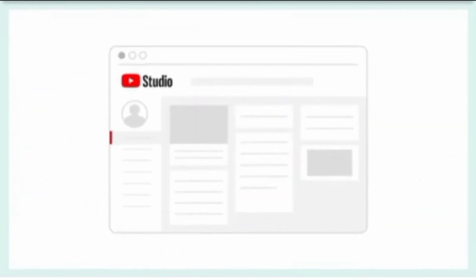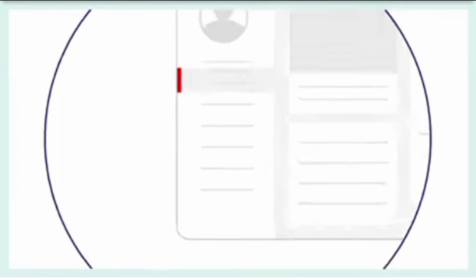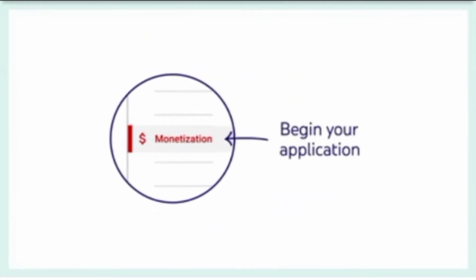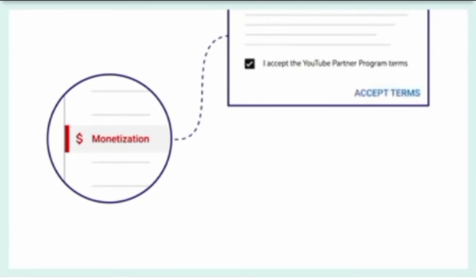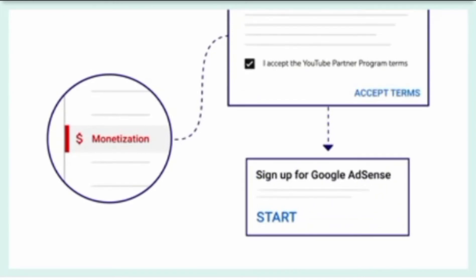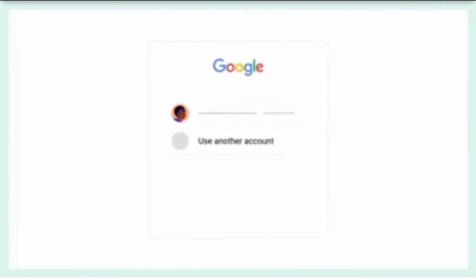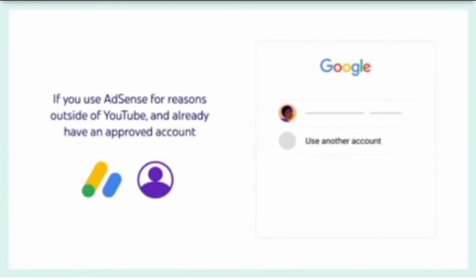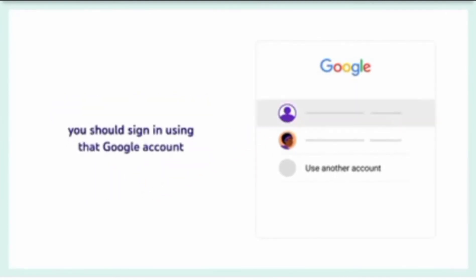First, sign in to YouTube Studio on desktop. Go to Monetization in the left menu where you'll begin your application. From there, review and accept the YouTube Partner Program terms. Then click Start on the Sign Up for Google AdSense card. Then choose which Google account you would like to use for AdSense. Note that if you use AdSense for reasons outside of YouTube and already have an approved account, you should sign in using that Google account. If you're not sure if you have an existing account, select "I don't know" and complete the flow.